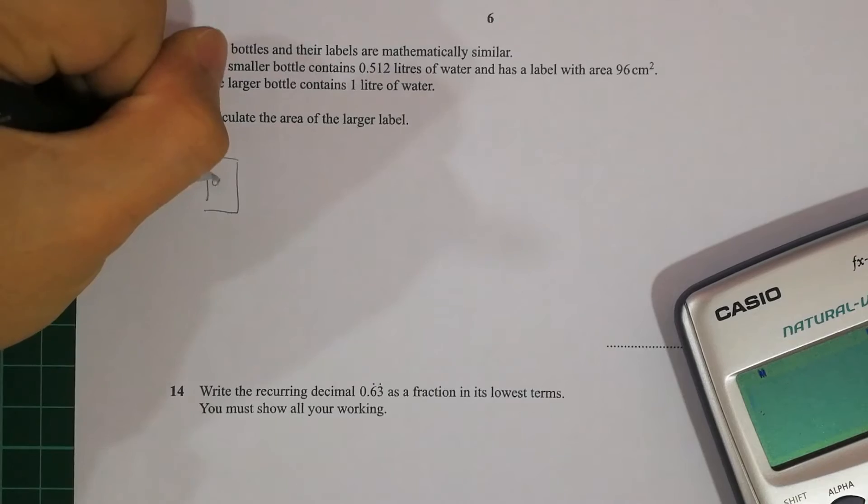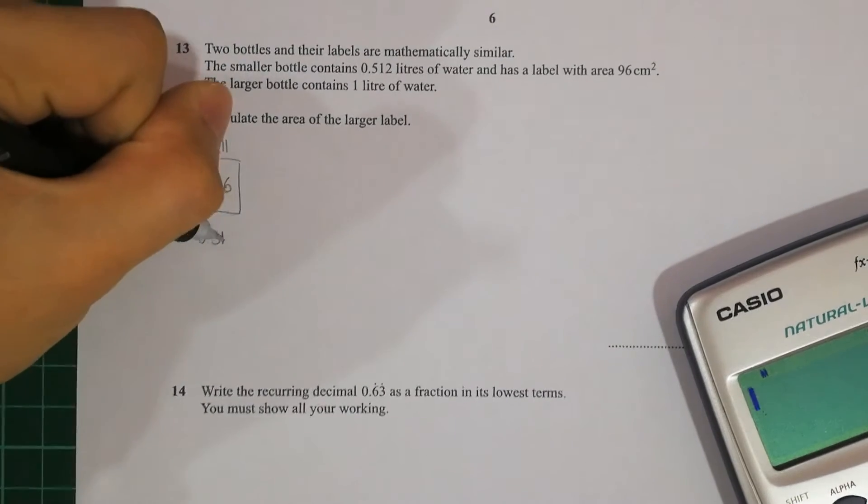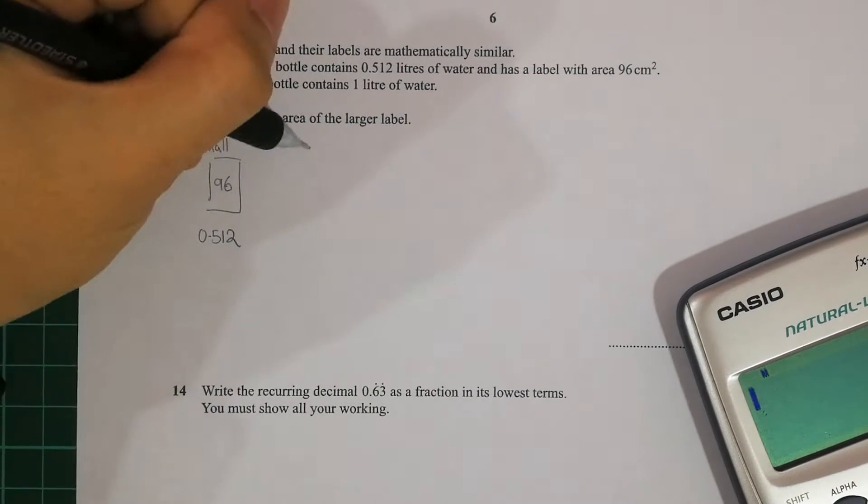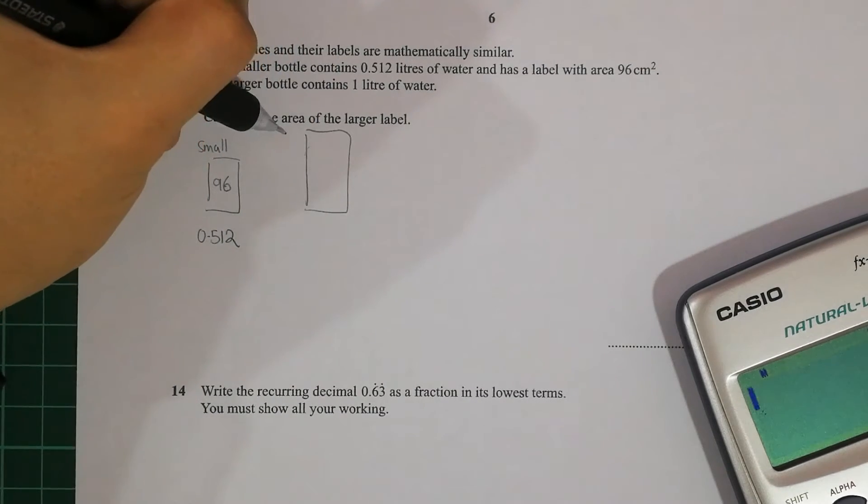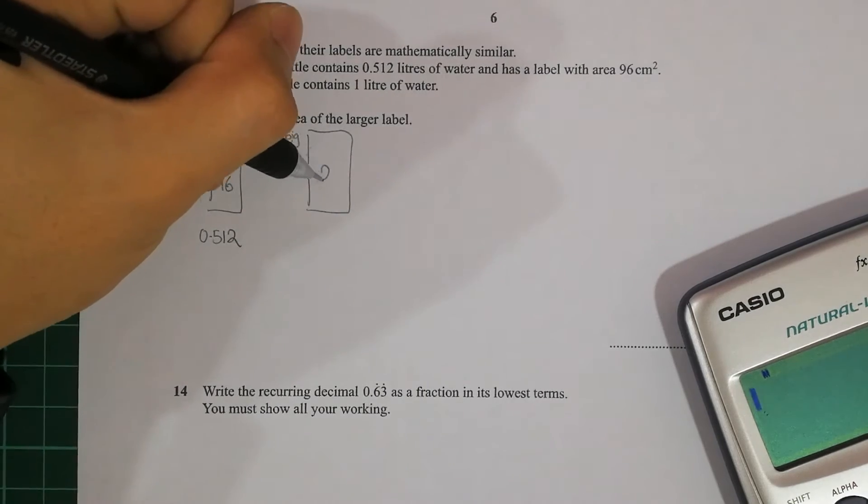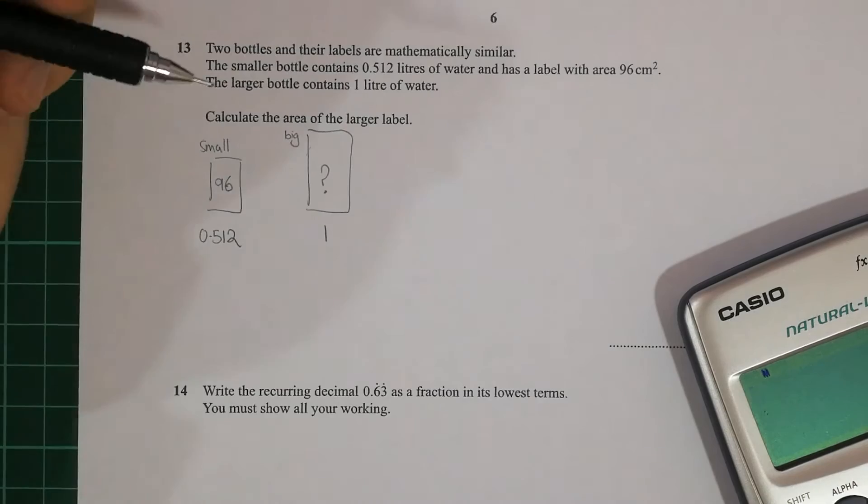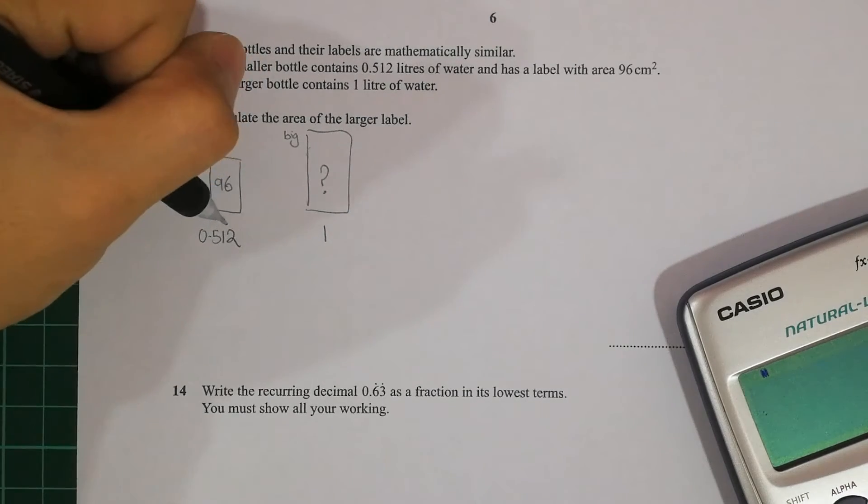So for example, the first one is a small bottle, and the area itself is 96 cm square and it contains 0.512 liters of water. Right by the large one, the area itself is unknown, and the liters is 1.